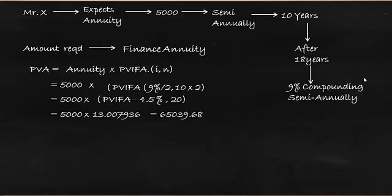So 5000 multiplied by 13.007936 gives us 65,039.68. This is the present value of 5000 which he is going to receive for 10 years at 9% compounded semi-annually. Now, how much should be invested now — that is 18 years before — to generate this amount after 18 years? So 65,039.68 is the future value we need after 18 years, and we need to find its present value.